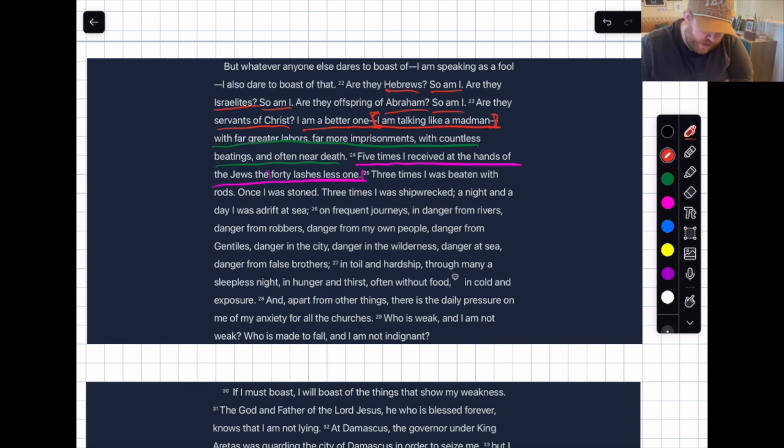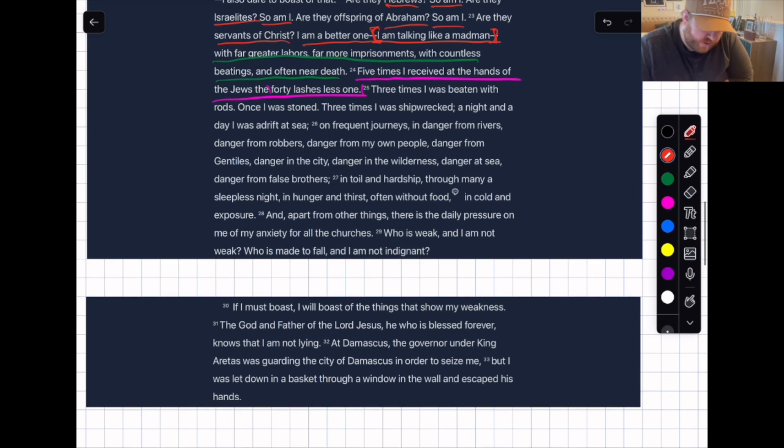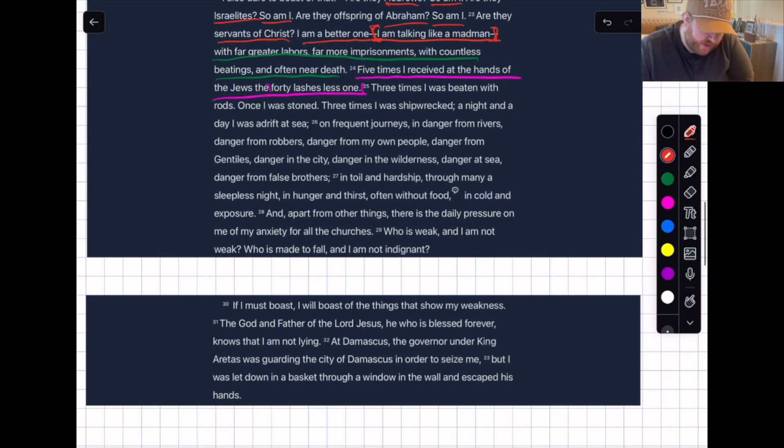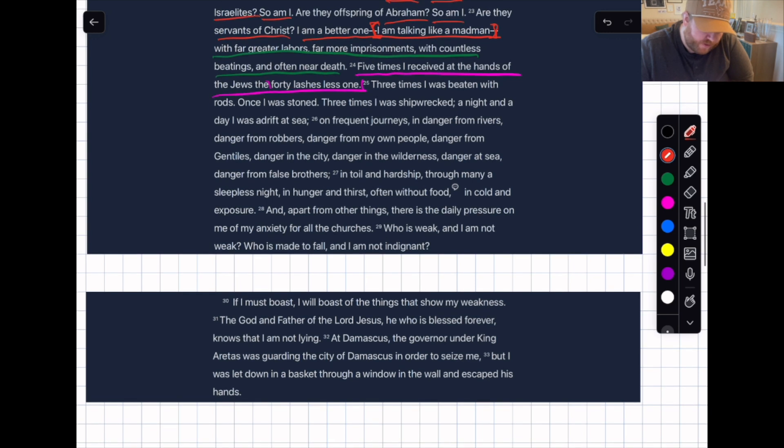On frequent journeys in dangers from rivers, danger from robbers, danger from my own people, danger from Gentiles, danger in the city, danger in the wilderness, danger at sea, danger from false brothers, in toil and hardship through many a sleepless night, in hunger and thirst, often without food, in cold and exposure. And apart from other things, there's the daily pressure on me, the anxiety for all the churches. Paul's feeling all these things plus anxiety.